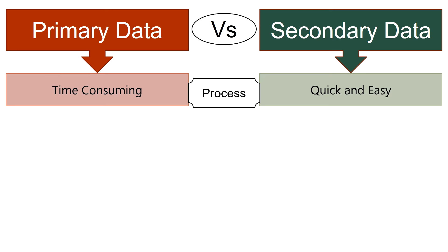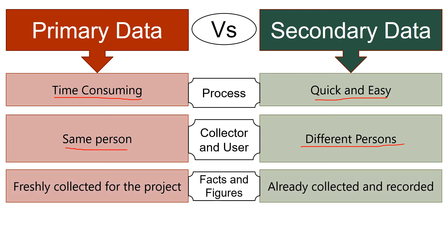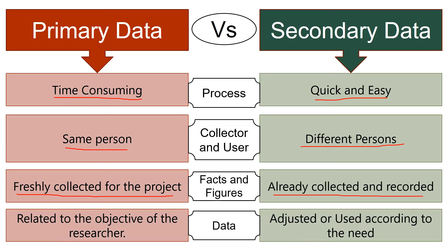As primary data collection requires a high level of research and efforts of the researcher, it is a time consuming process. On the other hand, as the main research is conducted by some other person, secondary data collection is a quick and easy method. In case of primary data, the collector and user of information is always the same person, whereas in case of secondary data the collector and user are different persons. In case of primary data the facts and figures are freshly collected for the project, while in case of secondary data the facts and figures are already collected and recorded by the primary researcher. Finally, in case of primary data the data is always related to the objective of the researcher, whereas in case of secondary data the data is adjusted or used according to the need of the researcher.